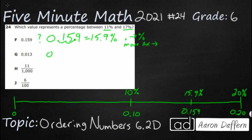Now 0.013 — even though 13 is between 11 and 17, move the decimal over twice and it's only 1.3%, because this is 13 thousandths, not 13 hundredths. So one too many decimal spots. This is 1.3%, so that goes way over here on the number line — 0.013 equals 1.3%. So not that one.